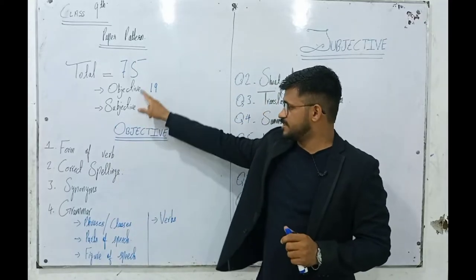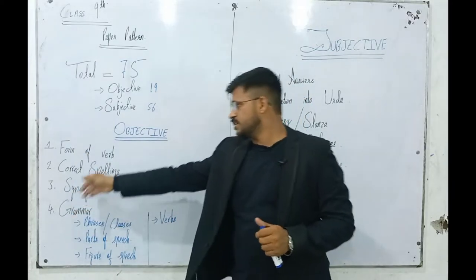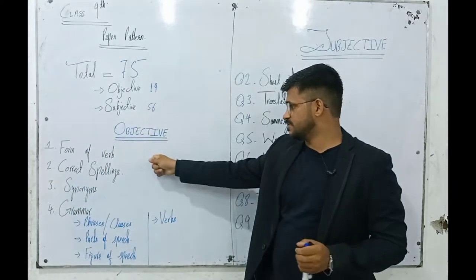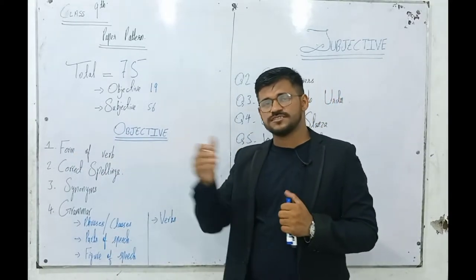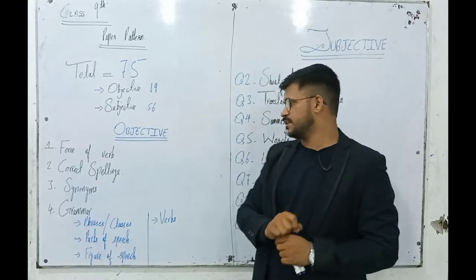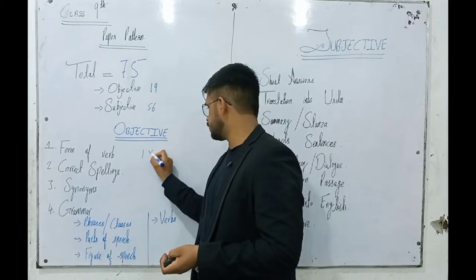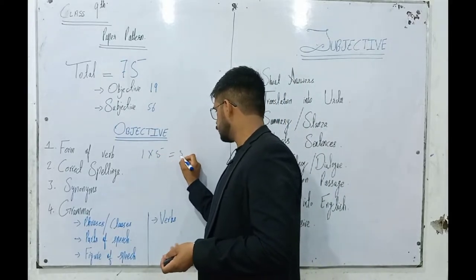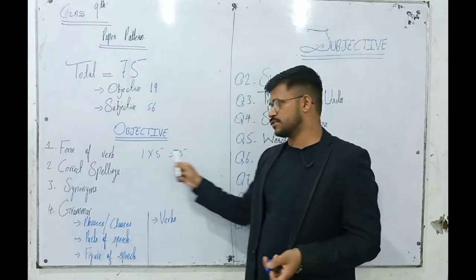The objective section has 4 portions of MCQ. The first portion is form of verb. Next one is correct spelling. We have 1 multiplied by 5 marks, giving us 5 MCQs with 1 mark each, totaling 5 marks.